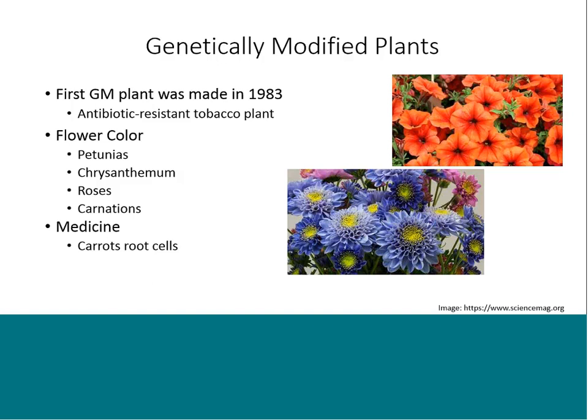You do have ornamental flowers — things like bright orange petunias, blue chrysanthemums, a lavender rose, and carnations — where the goal is to achieve more vibrant colors. There's also a medical example: carrot root cells have been modified to generate a medicine used for gout. There's an enzyme that helps people with gout digest food more easily and improves quality of life. Carrot root cells are particularly easy to insert this gene into to generate the enzyme, and then the enzyme is harvested out of those cells.